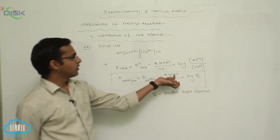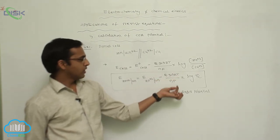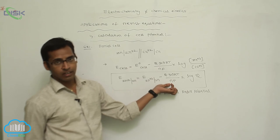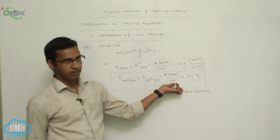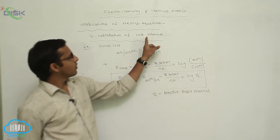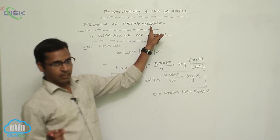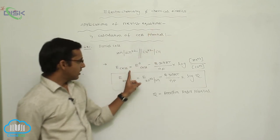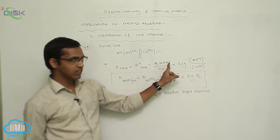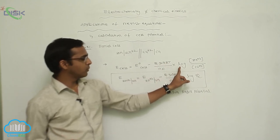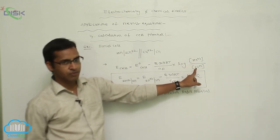The remaining values: R means gas constant, T means Kelvin temperature, N means number of electrons, F means Faraday. That Faraday value is 96500. The calculation of cell potential with help of Nernst equation is E cell equals E naught cell minus 2.303 RT by NF into log concentration of product by concentration of reactant.